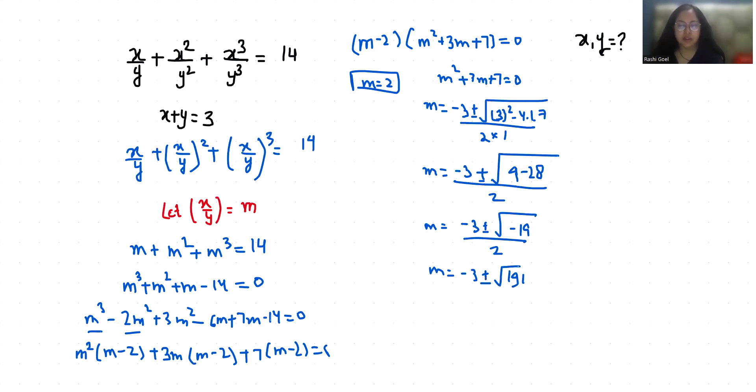So we are going to reject this value because it is complex. So m equals 2. We know that we took substitution x by y equals m, so x by y equals 2. From here, x equals 2y. Now the given equation is x plus y equals 3.